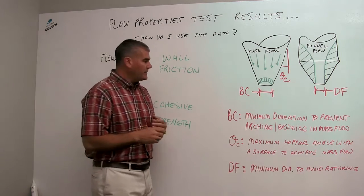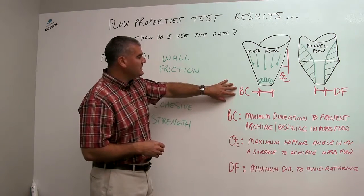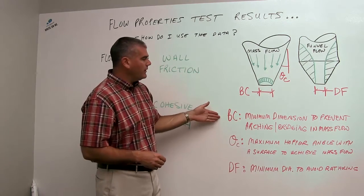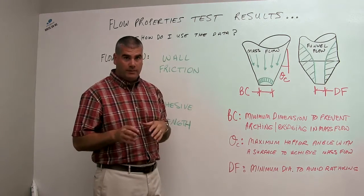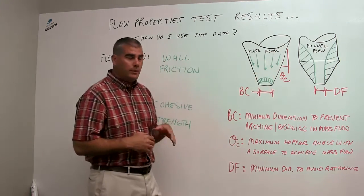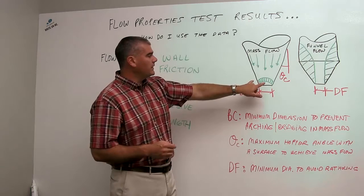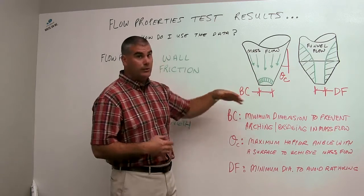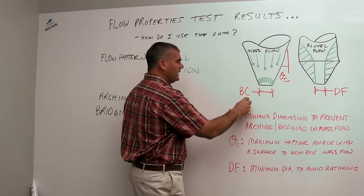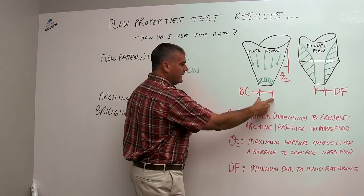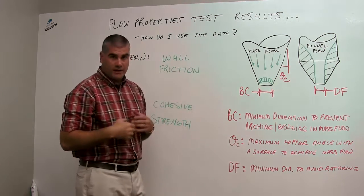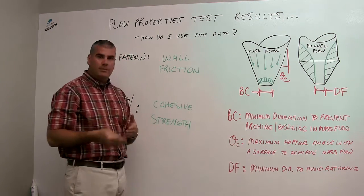So in that case, when we go to the test report, we look under the section for cohesive strength. You'll see some data that will say BC. That is the minimum dimension needed to prevent an arch or a bridge in a mass flow hopper. So even if we were to get flow along the walls of mass flow, we have to make sure the outlet is sufficiently large enough to prevent that bridge so we can get flow out of the hopper. So you would see a solution for BC, B stands for the span, C stands for the cone shape, and that would tell us that critical dimension needed. It's a minimum value.